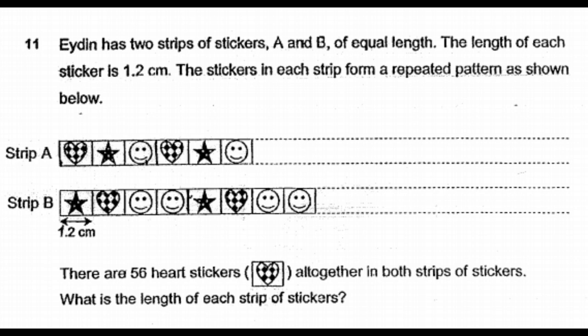Strip A has a heart, star, smiley face, and then it repeats—so every three stickers repeat. Strip B has a star, heart, smiley face, smiley face, and then it repeats—so every four stickers, Strip B repeats.